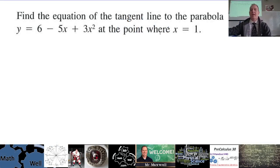Okay, so find the equation of the tangent line to the parabola at the point where x equals 1. We're gonna have a parabola and then at some point, somewhere around here, what is the equation of this line right here, the tangent line? So that's what we're looking for.